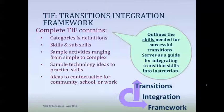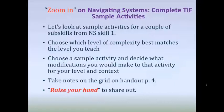On page three of the handout you see an example of the Navigating Systems definition, skills, and sub-skills. On page four you'll find the activity grids. You're going to choose one of the skills and a sub-skill, choose a level — beginning, intermediate, or advanced — and then think about the activity, describe it, and reflect on how you could tweak it to make it work in your classroom.